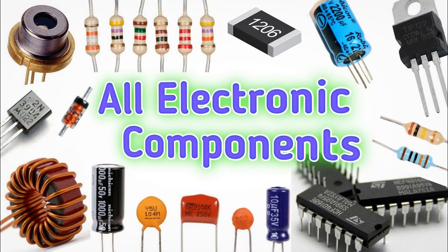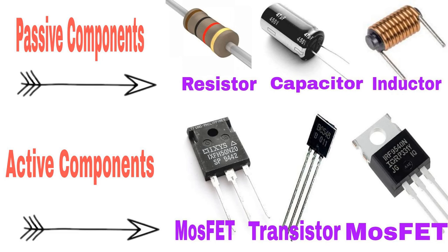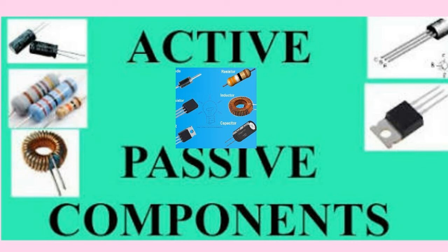Amplification refers to the process of increasing the amplitude or strength of an electrical signal. Amplifiers are devices or circuits designed to perform this function, and they are widely used in electronics for various applications including telecommunications, audio engineering, and signal processing. An amplifier takes an input signal and produces an output signal that is a larger replica of the input. The amplification factor, often denoted as gain (G), represents how much the output signal is magnified compared to the input. There are various types of amplifiers, including voltage amplifiers, current amplifiers, and power amplifiers. Common active components used in amplifiers include transistors and operational amplifiers (op-amps).